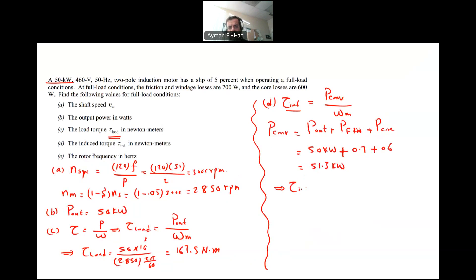So from this, the induced torque will equal to 51.3 times 10 to the 3 divided by omega M, which is the same thing, 2850 times 2 pi over 60. And this will give me a total torque of 171.9 newton meter.